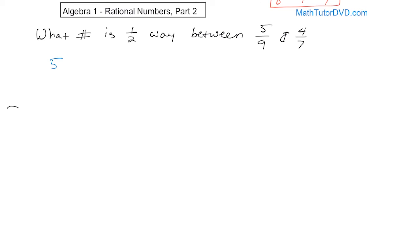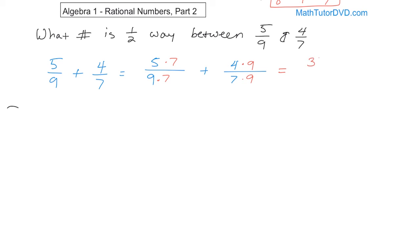So you take 5 ninths plus 4 sevenths. The common denominator is going to be tough, so multiply the first fraction top and bottom by 7, and the second fraction top and bottom by 9. 5 times 7 is 35 over 63, and 9 times 4 is 36 over 63. Now you have a common denominator. 35 plus 36 is 71, so the sum is 71 over 63.